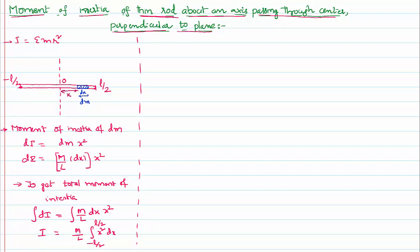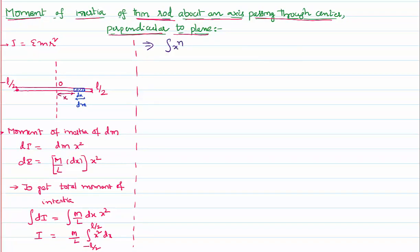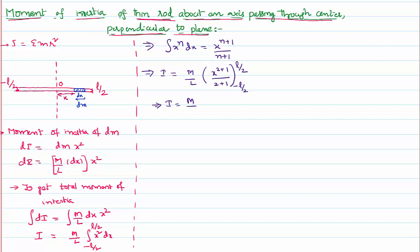To simplify this equation, we use the formula: the integral of xⁿ dx equals x^(n+1) / (n+1). Applying this formula, moment of inertia equals M/L times the integral of x² dx, which gives x³/3, with limits from -L/2 to +L/2.